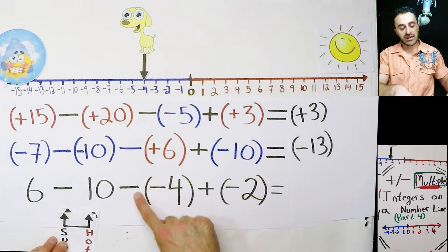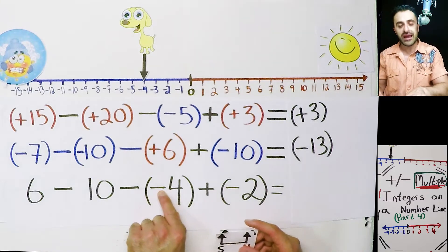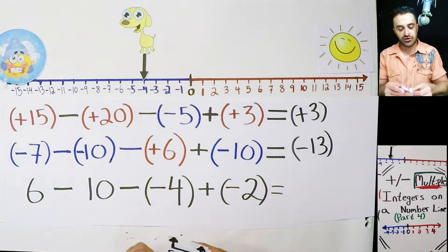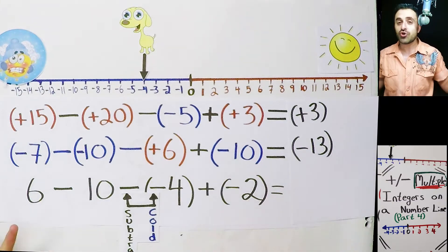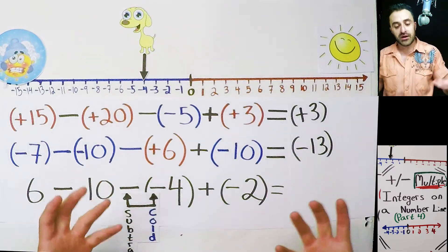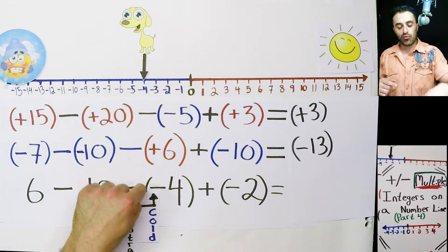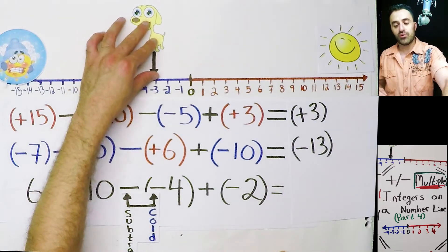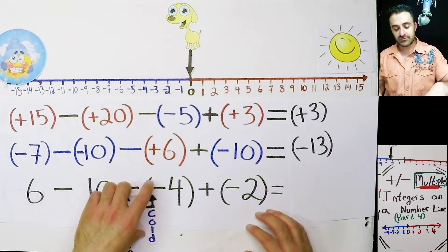Here we have subtraction again. So subtracting a negative number. Negative numbers are cold. So we'll use this one here. Subtract the cold, you suck the cold out. There's no more cold, it starts warming up. So which way do we move? To the warming side. So we're going to warm up four degrees. So we're going to go 1, 2, 3, 4. Oh, he's back at zero again.